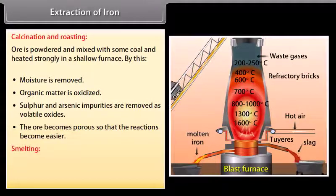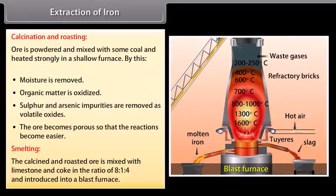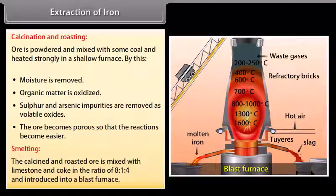Smelting. The calcined and roasted ore is mixed with limestone and coke in the ratio of 8:1:4 and introduced into a blast furnace.